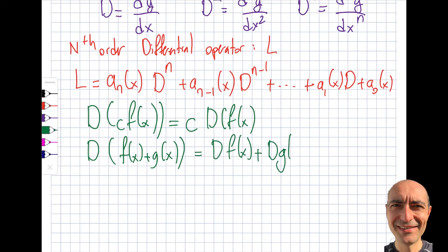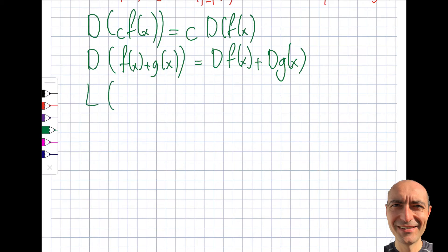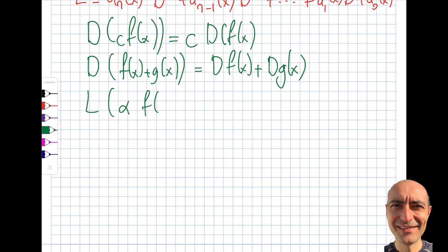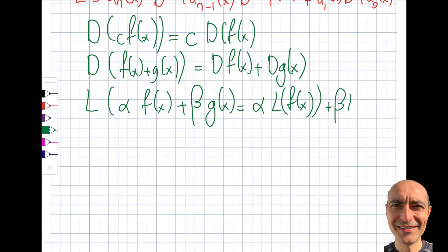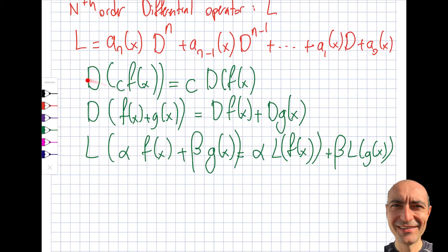We also know that the derivative of a sum equals the sum of the derivatives: D[f(x) + g(x)] = Df(x) + Dg(x). Combining these two properties, we get that L[αf(x) + βg(x)] = αL[f(x)] + βL[g(x)]. So the operator L is linear, and this is what allows us to write the differential equation more compactly using the operator notation.